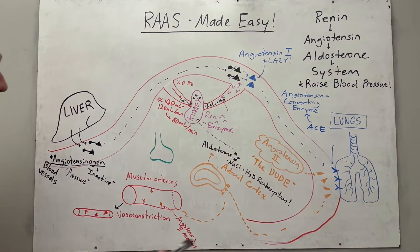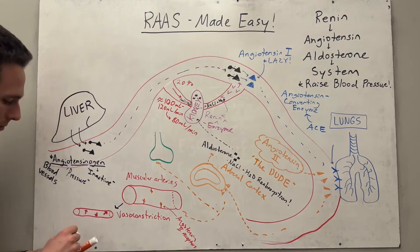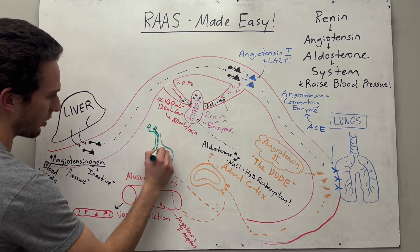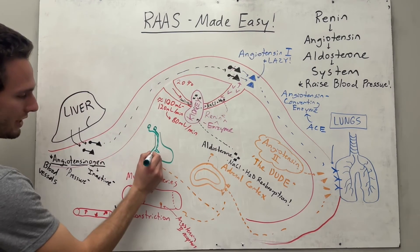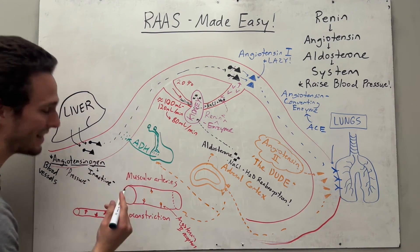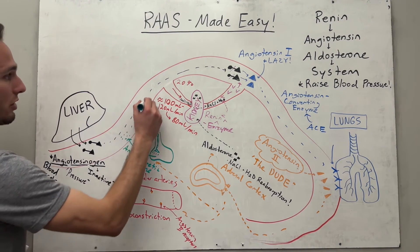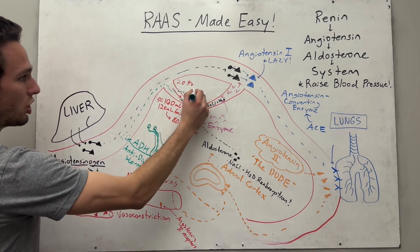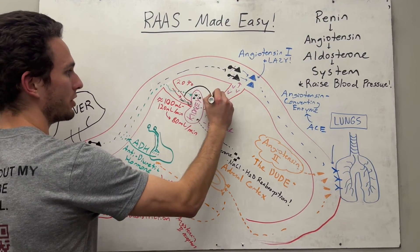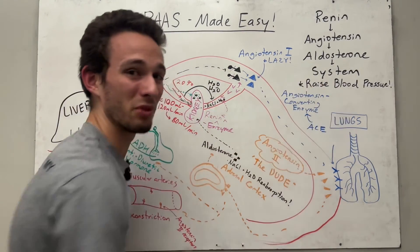Last but not least, angiotensin 2 can also travel to the posterior pituitary gland. The neurons reaching down into the posterior pituitary from the hypothalamus will release a hormone into the bloodstream called ADH — antidiuretic hormone. ADH travels to the kidneys and tells them to reabsorb more water back into the bloodstream. So more water brought back into the bloodstream once again increases blood volume and blood pressure.